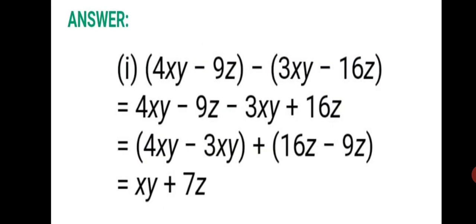The first sum has two expressions to be subtracted. We write down 4xy minus 9z as it is. When opening the second bracket, we change the signs: 3xy is positive, so we write it as minus 3xy, and minus 16z we write as plus 16z. Now grouping like terms: 4xy minus 3xy in one bracket, plus 16z minus 9z in another. Solving: 4xy minus 3xy gives xy, and 16 minus 9 is 7, so the final answer is xy plus 7z.